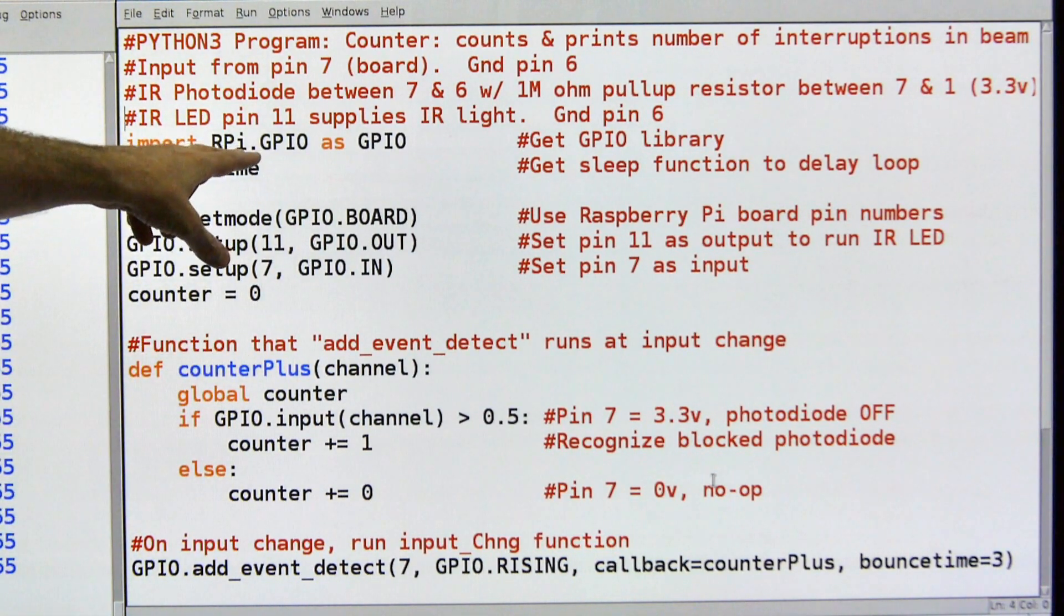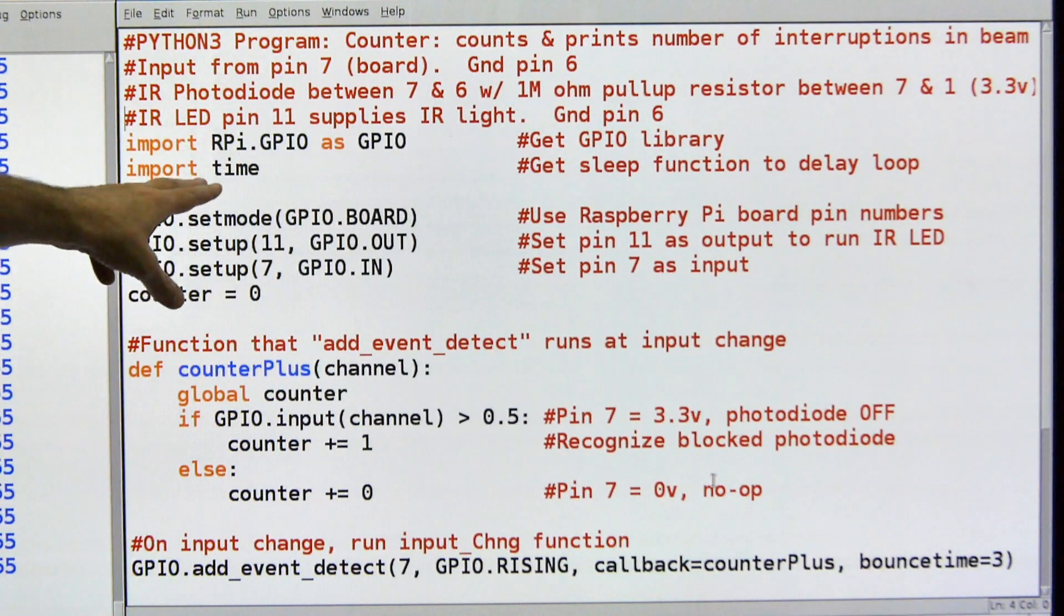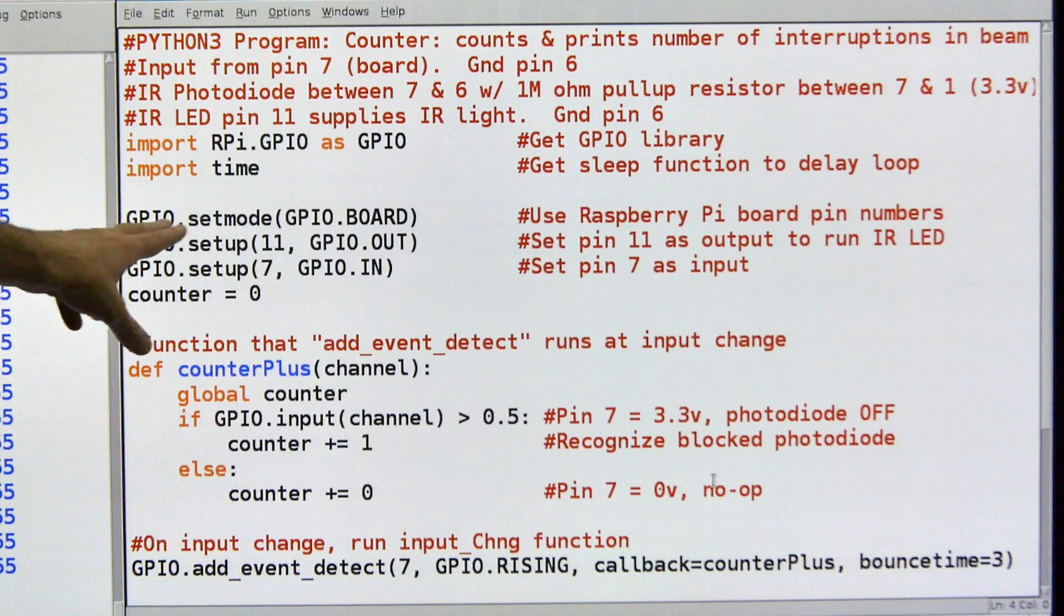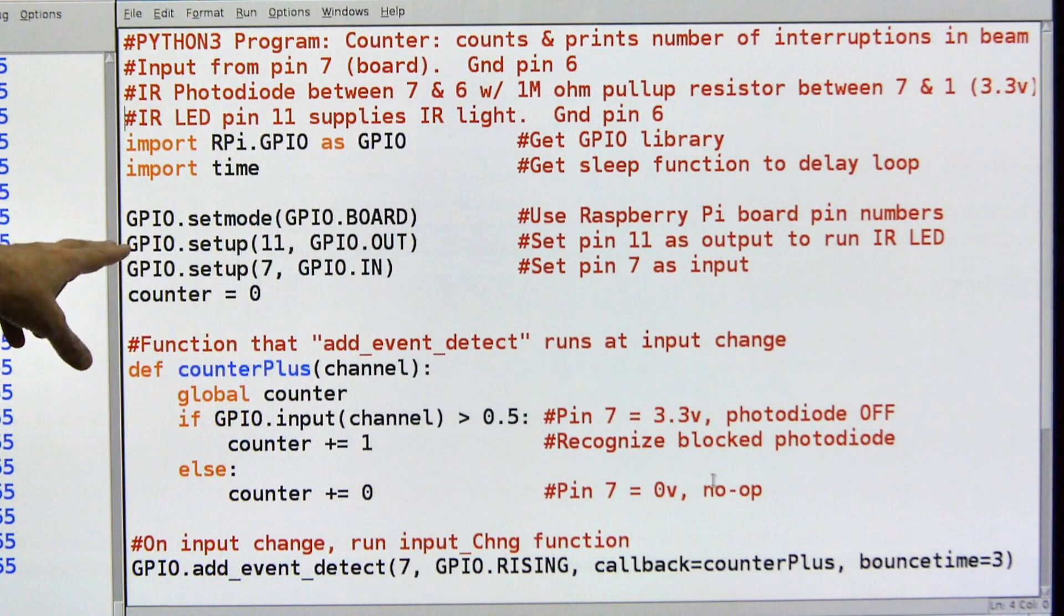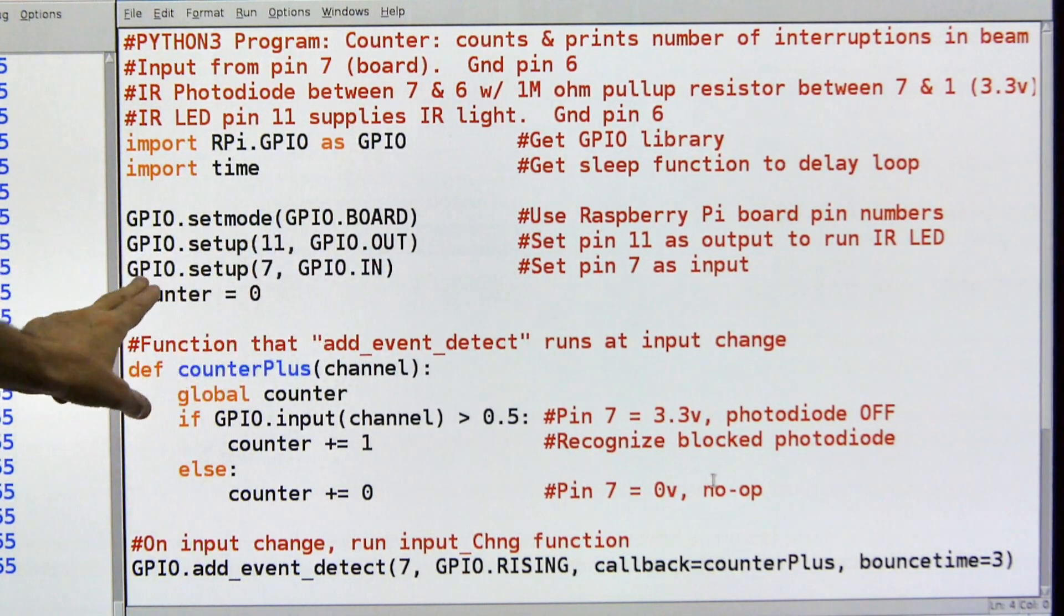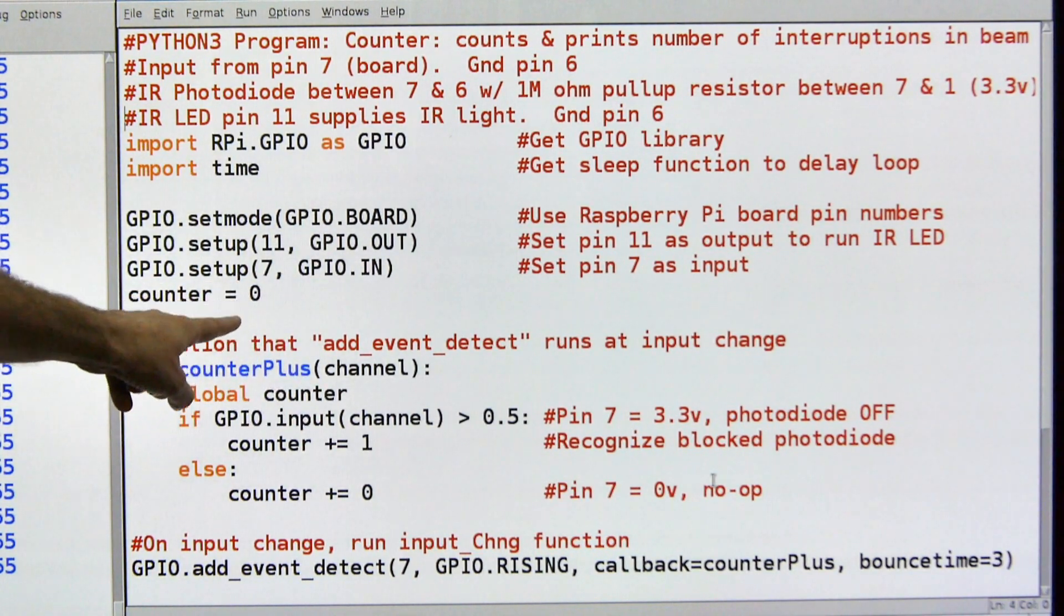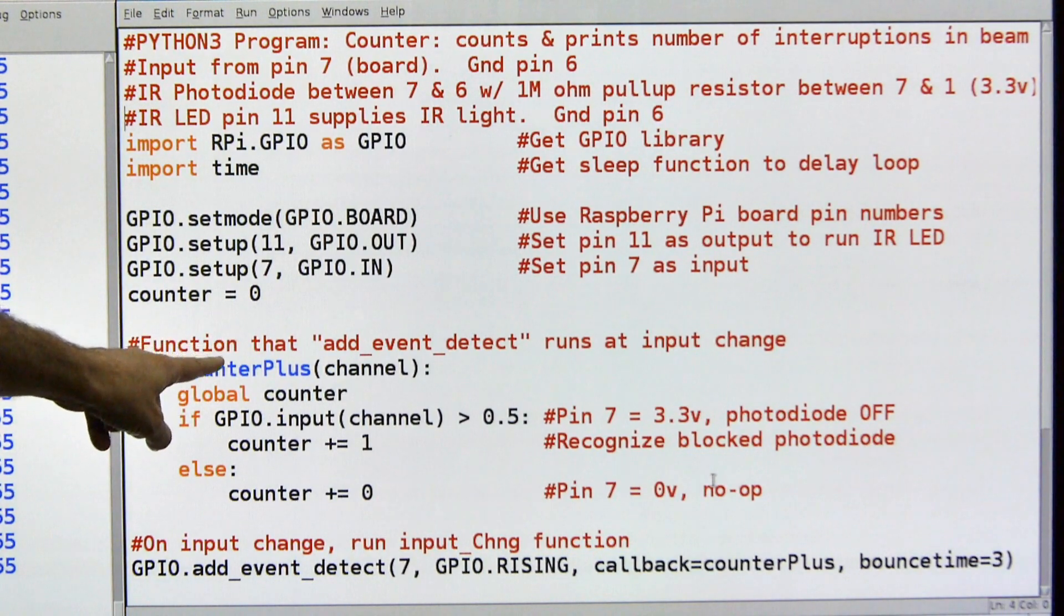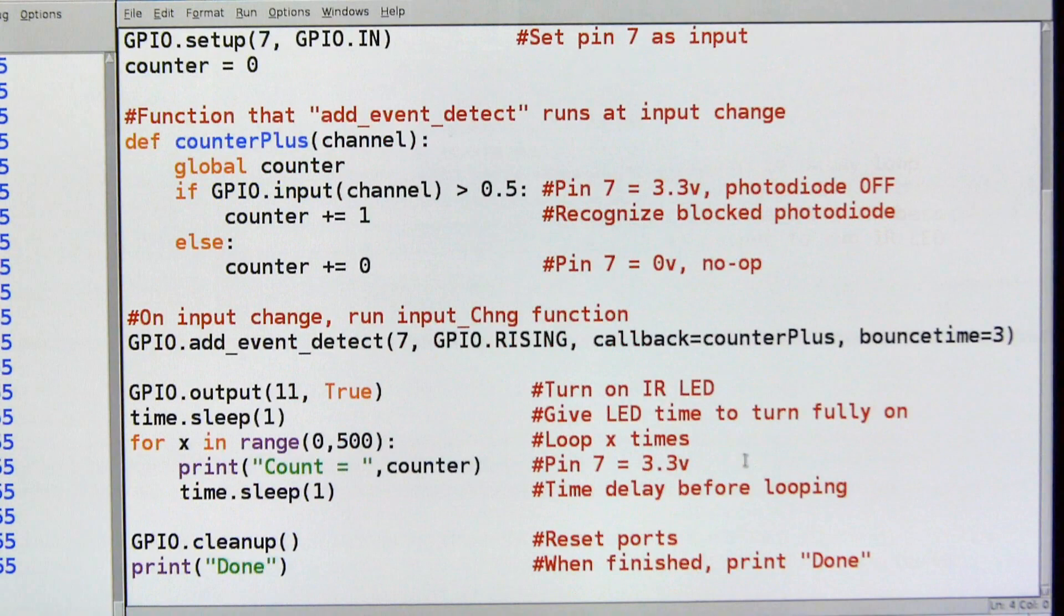We're going to import our GPIO library so that we have pin numbering and all that good stuff. We're going to import time so I can use the sleep function. We're going to use the board numbering system. I know a lot of people prefer the other, but I like the board numbering system. I'm going to set pin 11 to output, and I'm going to set pin seven to input. I'm going to define a counter variable and set it to zero. This is my number that I'm keeping track of.